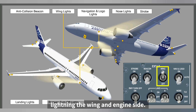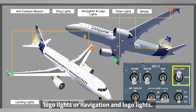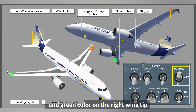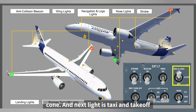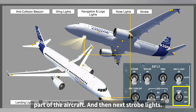Next are the nav logo lights, or navigation and logo lights. They have a red color light on the left wing tip, a green color on the right wing tip, and a white color light on the tail cone. Next is the taxi and takeoff light, located under the nose part of the aircraft.